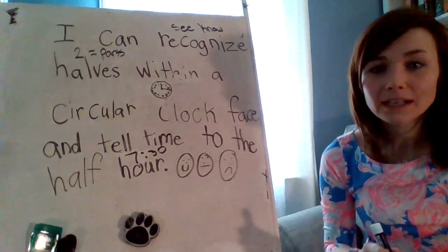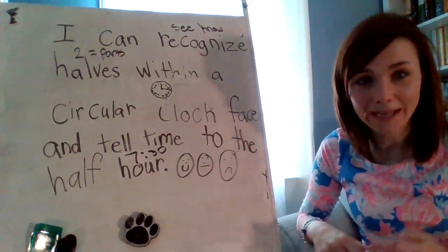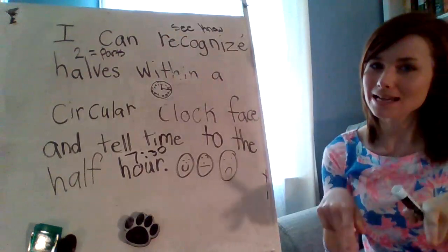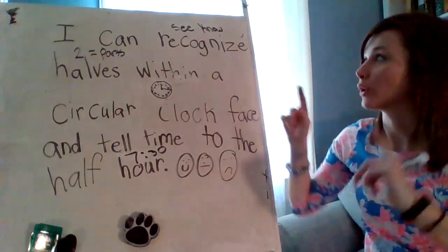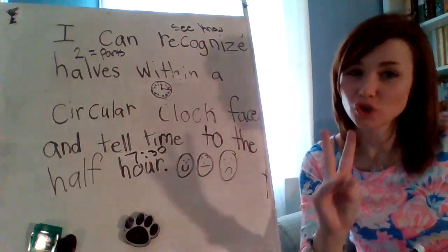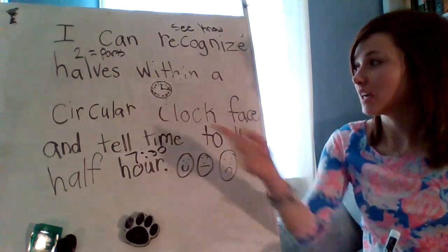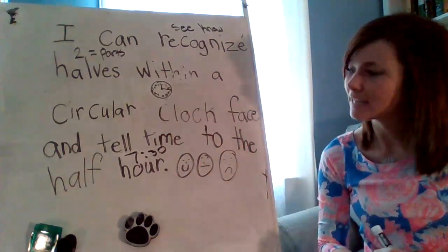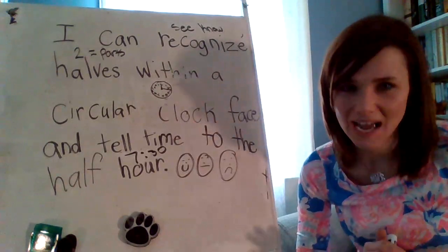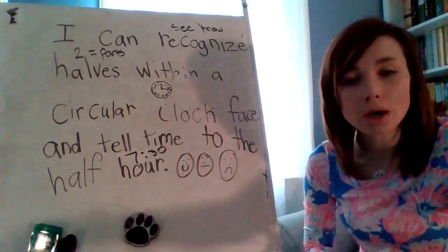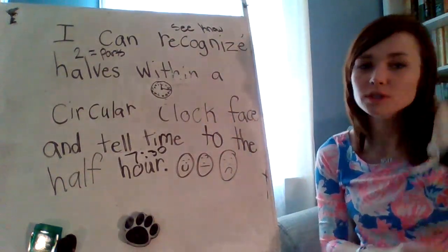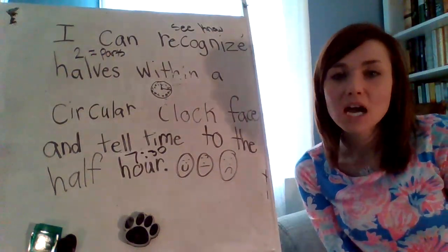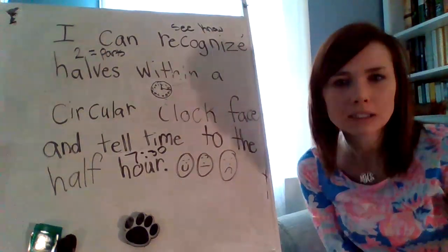Let's read this back together. I can see or know that a half is two equal parts within a circular clock face and tell time to the half hour. We did this a little bit on Thursday and Friday, and now we're going to keep going with it because it's a little tricky.